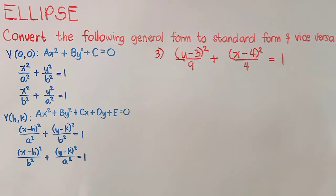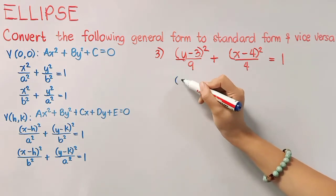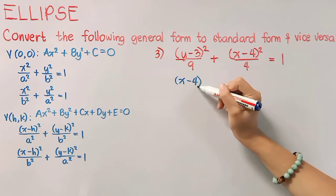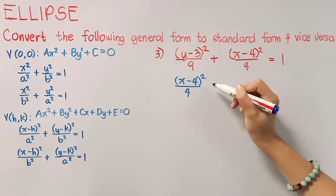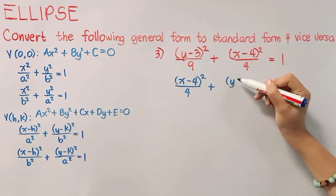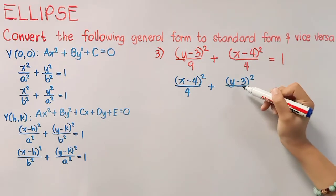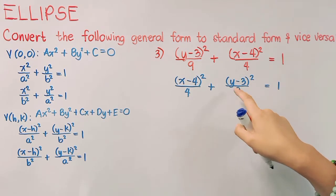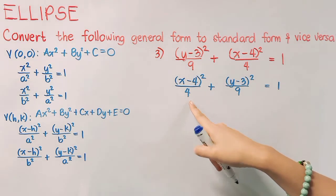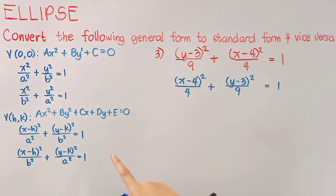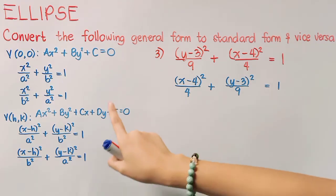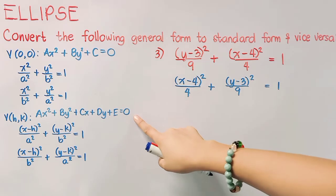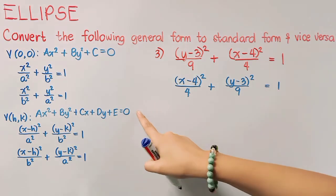Our item here is a standard form of an ellipse with vertex hk, which looks like this, so our goal is to come up with its general form. Notice that our given here started with the term in the y variable, so we will simply interchange their positions and we are ready to solve. Remember that our bigger denominator is our a squared while our lesser denominator is our b squared. Therefore, this standard form actually looks like this, and we are to provide the general form here, which is not in fraction form.